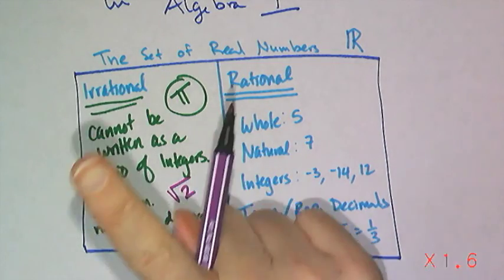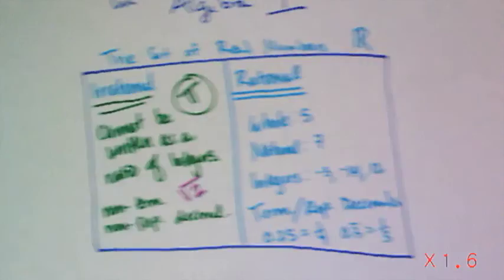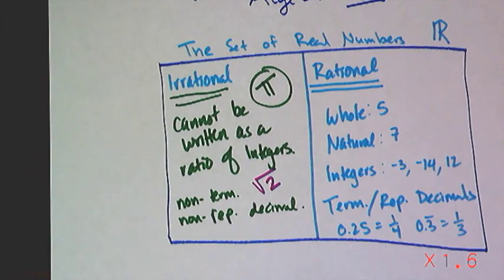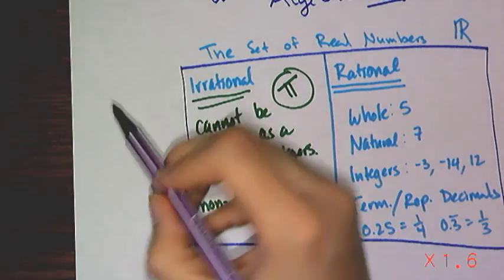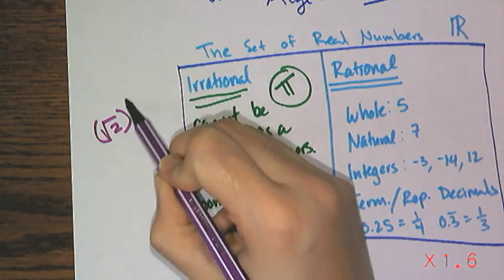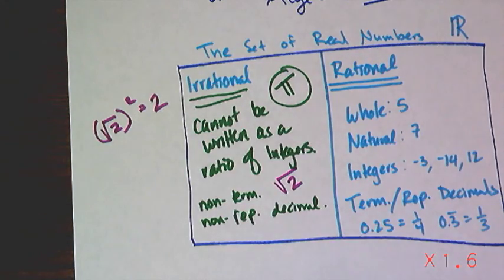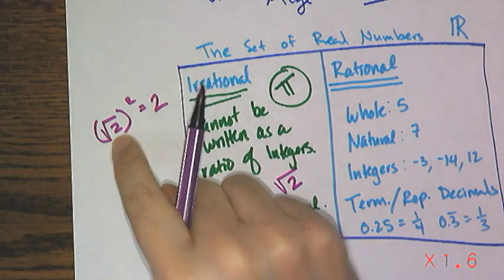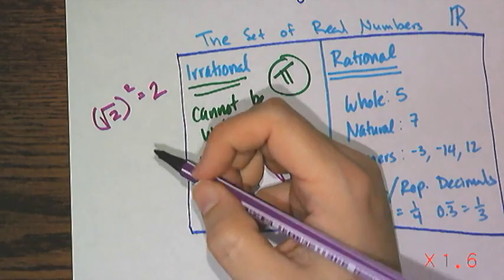Now, roots are not limited to square roots. You can also have cube roots and fourth roots and fifth roots. So we know, by definition, that if I take the square root of 2 and I square it, I'm going to get 2 back, right? Because the square root of 2 times the square root of 2 is 2. Well, there are these things called cube roots.